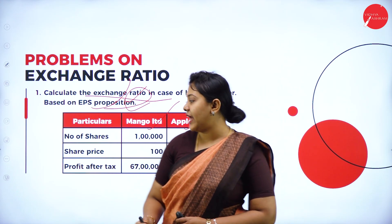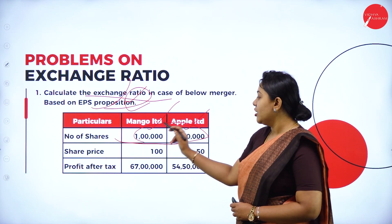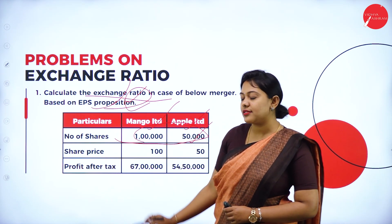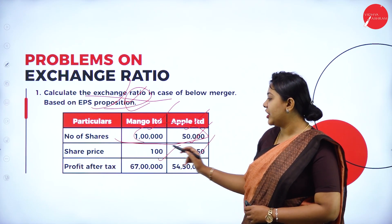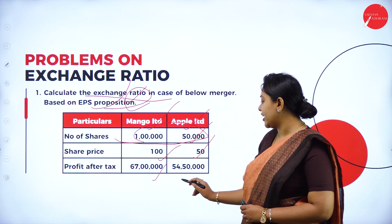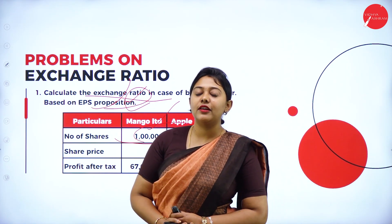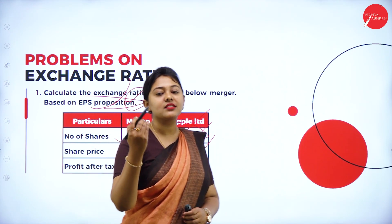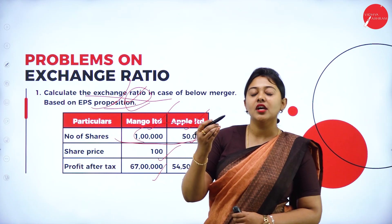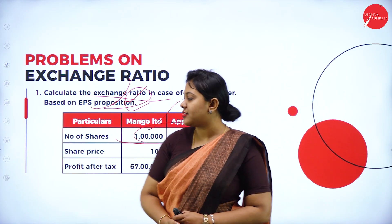The number of shares is 1,000 for Mango Limited and 50,000 for Apple Limited. The share price is 150. Profit after tax (PAT) is 67 lakh and 54 lakh respectively. For the EPS calculation, in the last class we discussed the EPS formula: it is profit after tax divided by number of shares.